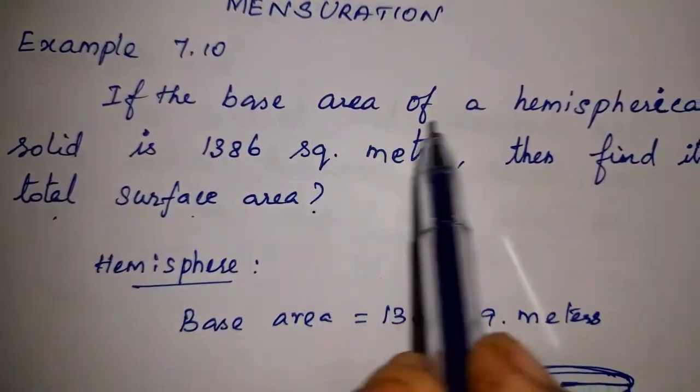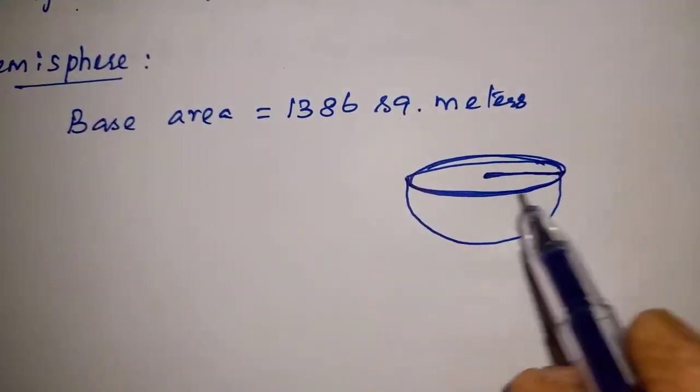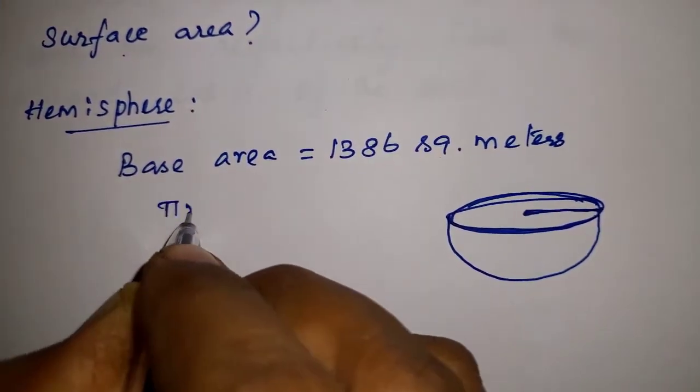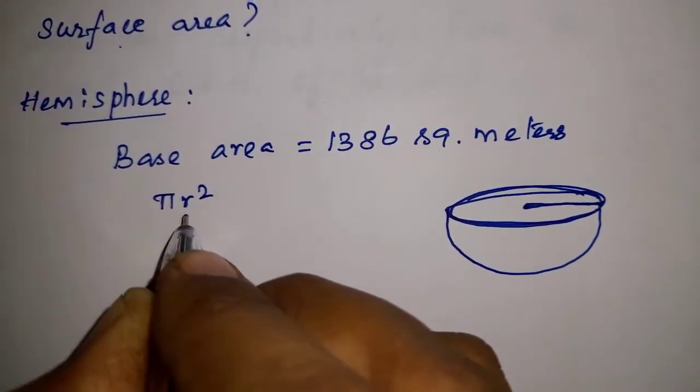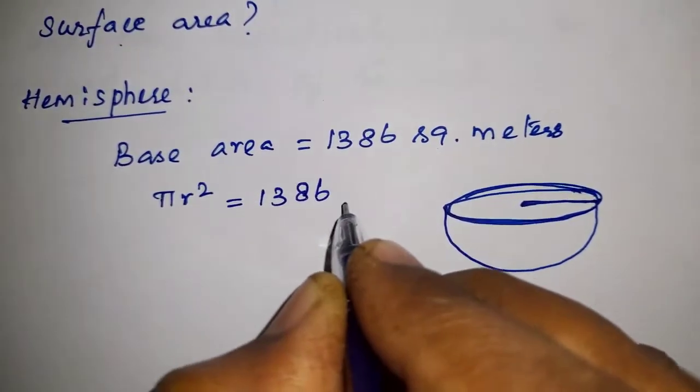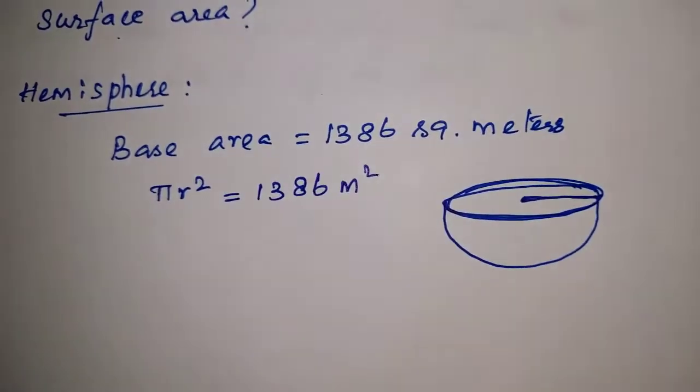Now, we have the base area of the hemisphere. The base area is a circle. This is the base area. πr² is equal to 1386 m². This is the base area.